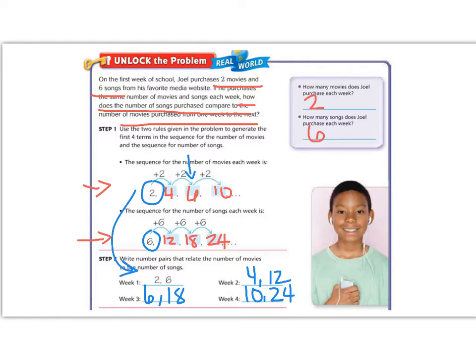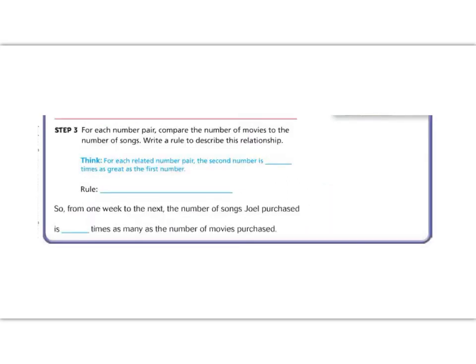All right, let's go on to step three. Step three says for each number pair, compare the numbers of movies to the number of songs, and write a rule for this relationship. So you can see that for each numbered pair, so if we look at the example of week three, we have six and eighteen. So we need to think, how are six and eighteen related? Well, I know that six times three is eighteen.